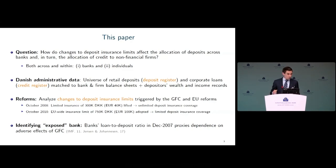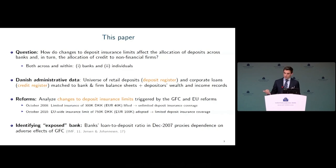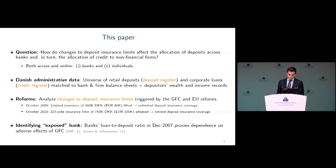We want to understand whether weaker banks disproportionately benefited from these deposit guarantees. We look at banks more exposed to the adverse consequences of the global financial crisis, measured by their loan-to-deposit ratio at end of 2007 — a proxy for banks' reliance on wholesale market funding, which froze when the global financial crisis broke out, triggering a liquidity squeeze on these banks.